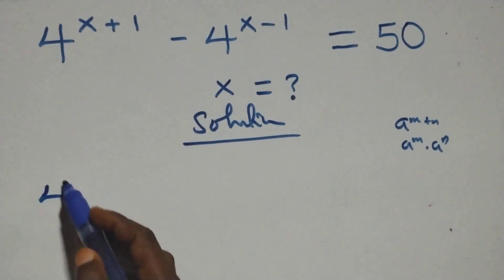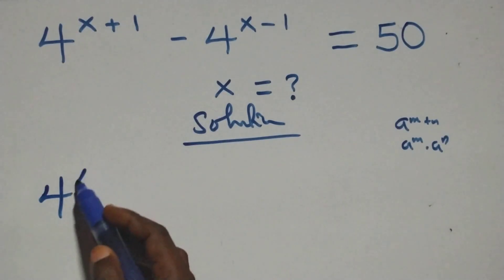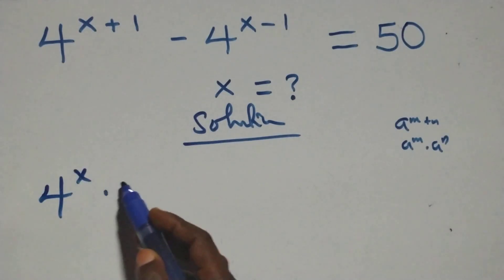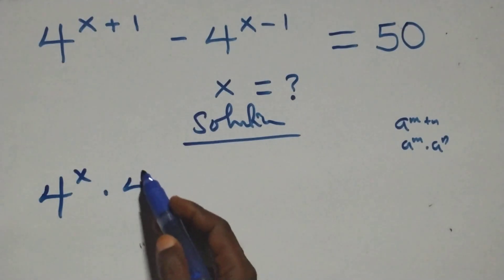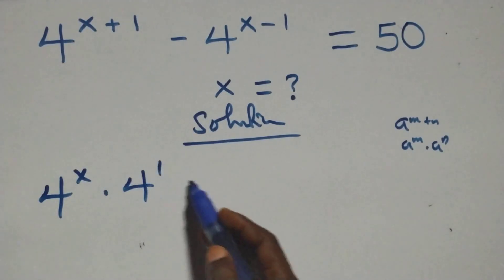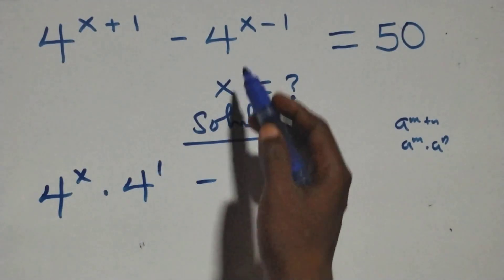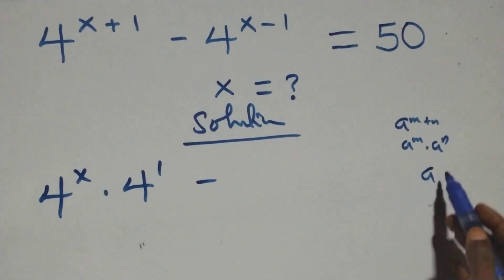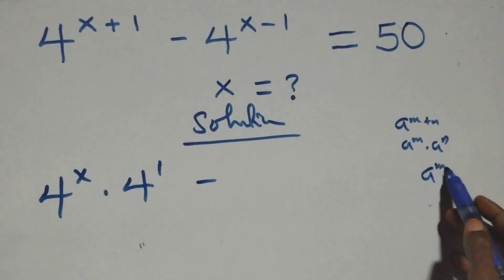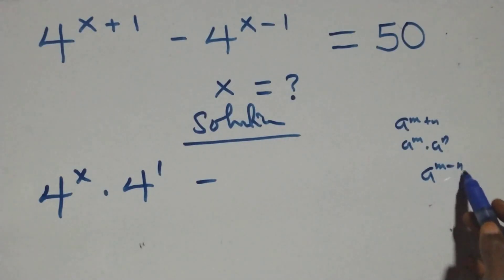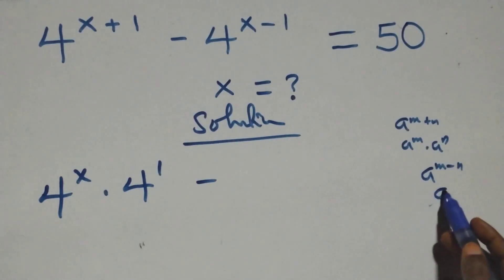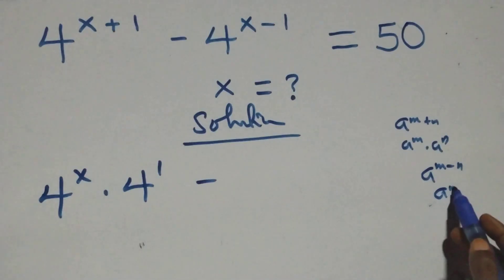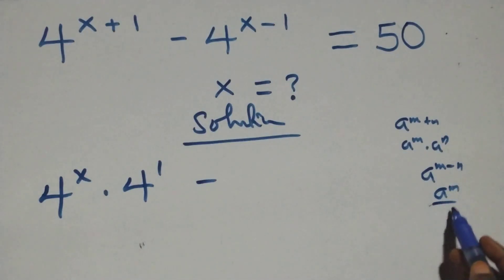For this here we have 4 raised to power x times 4 raised to power 1. Also this follows when we have a raised to power n minus n, same thing as a raised to power n over a raised to power n.